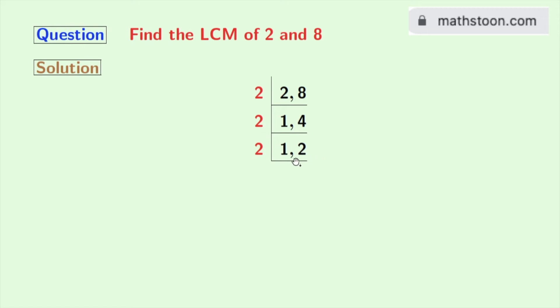And we get 1 in the second place and 1 remains the same in the first place as 1 is not divisible by 2. Now we have got 1 comma 1 here.